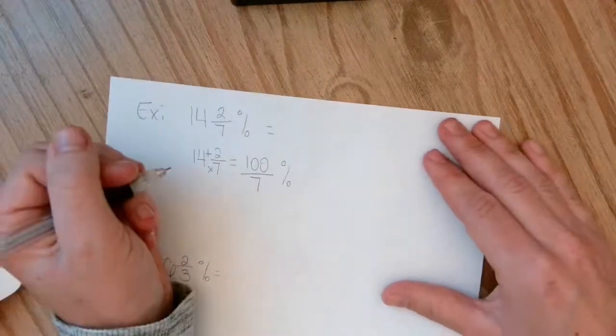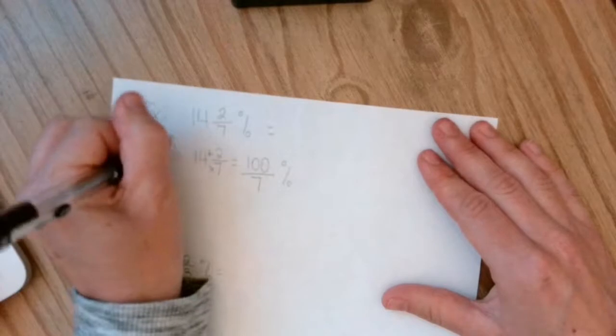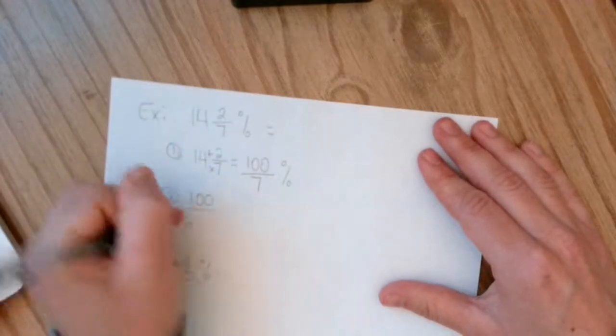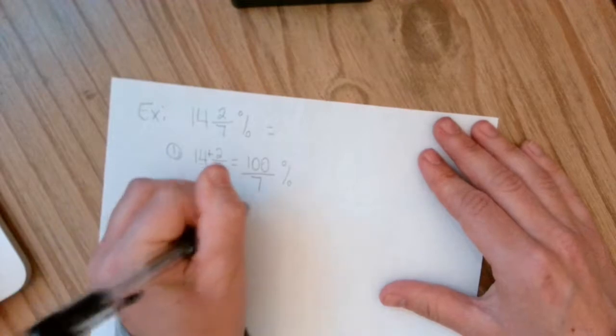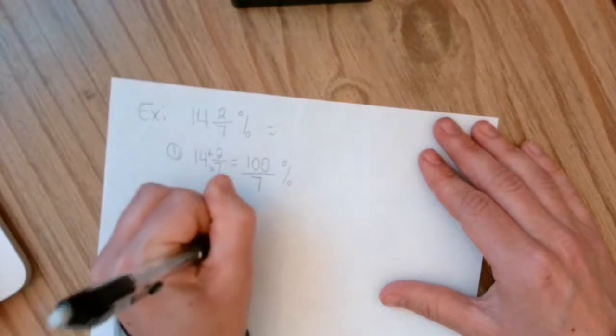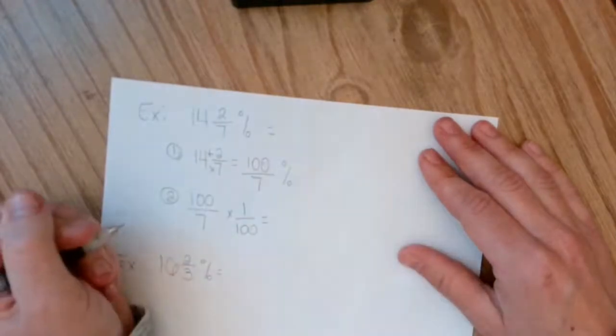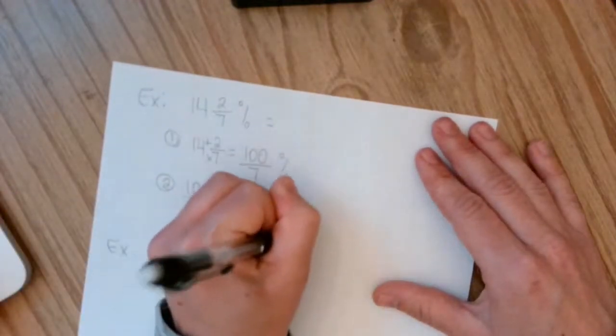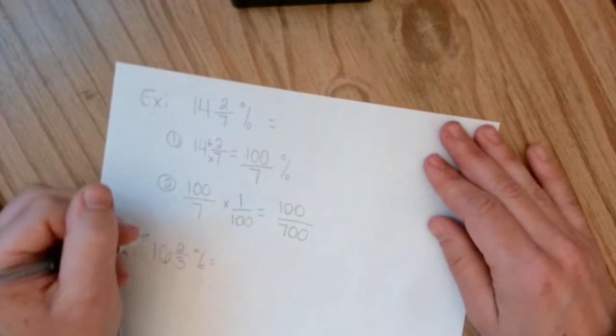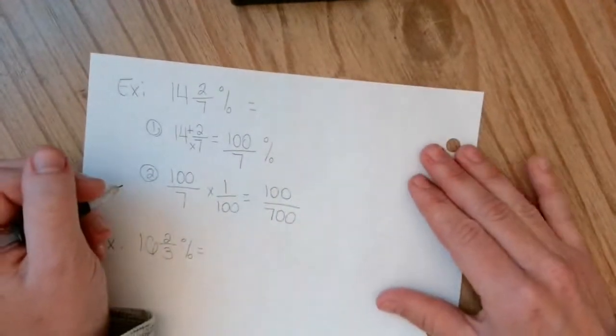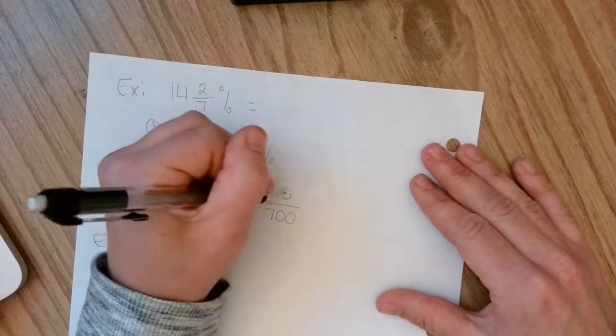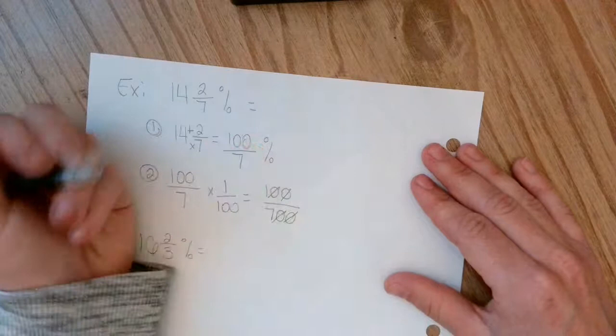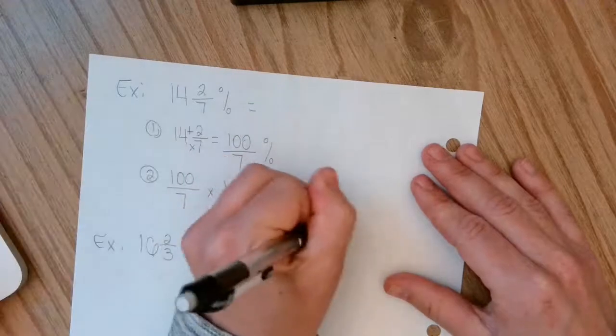And then you are going to take that and multiply it by 1 over 100. So then I get 100 over 700. And then the last step is to reduce it. So I have a bunch of zeros that I can cross out. These two can cancel out. These two can cancel out. So then I'm left with 1 seventh as my answer.